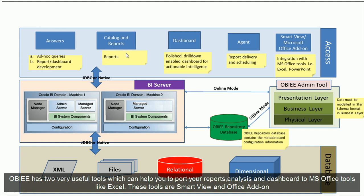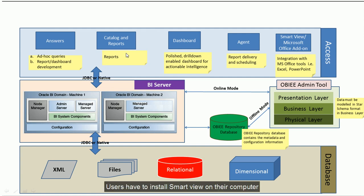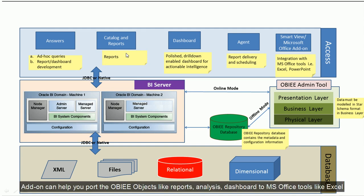OBIEE has two very useful tools which can help you port your reports, analysis, and dashboards to MS Office tools like Excel. These tools are Smart View and the MS Office add-on. Oracle acquired Smart View from Hyperion. Users install Smart View on their computer, and using it, most OBIEE reports, analysis, and dashboards can be run through Excel. The MS Office add-on has more limited functionality compared to Smart View, but it can also port OBIEE objects like reports, analysis, and dashboards to MS Office tools.